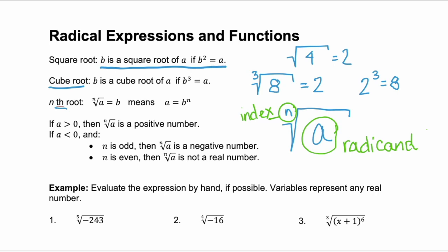So let's look at taking the nth root of different radicals. And we're going to follow this rule. So if a is greater than 0, then the nth root of a is going to be a positive number. But if a is less than 0, remember a's our radicand, and n, the index is odd, then the nth root of a is going to be a negative number. But if n is even, then the nth root of a is not a real number. So what this is really saying, this last one, is that you can't take a root of a negative number. But that's only if you have an even index.